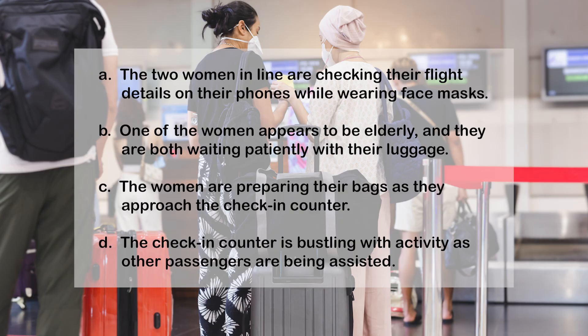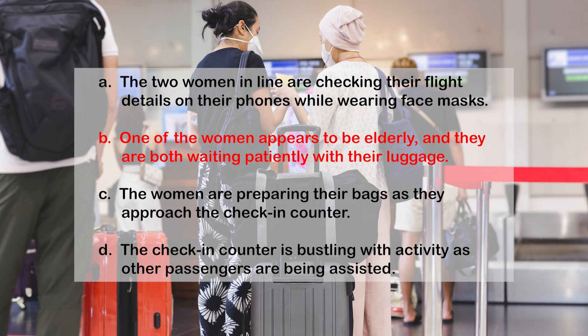A: The two women in line are checking their flight details on their phones while wearing face masks. B: One of the women appears to be elderly and they are both waiting patiently with their luggage. C: The women are preparing their bags as they approach the check-in counter. D: The check-in counter is bustling with activity as other passengers are being assisted. Answer: B — One of the women appears to be elderly and they are both waiting patiently with their luggage.